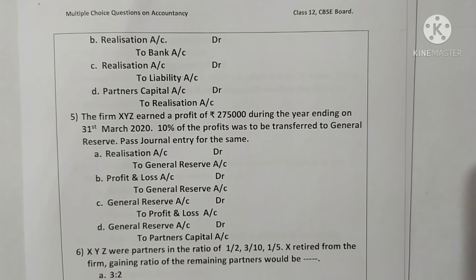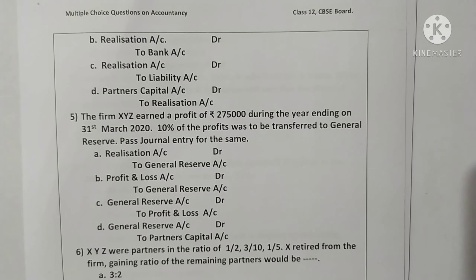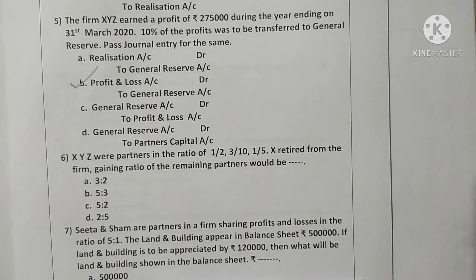Question five: the firm XYZ earned a profit of Rs. 2,75,000 during the year ending 31st March 2020. 10% of the profits was to be transferred to general reserve. While transferring to general reserve, it is to be credited and debited to P&L account. The accounting entry will be Profit & Loss Account debit, General Reserve credit. Here option B is correct.